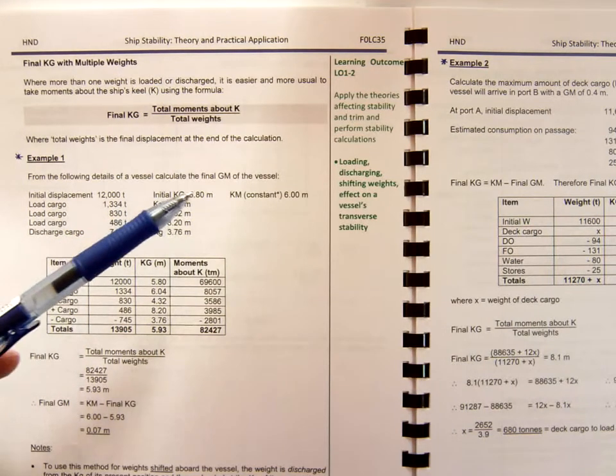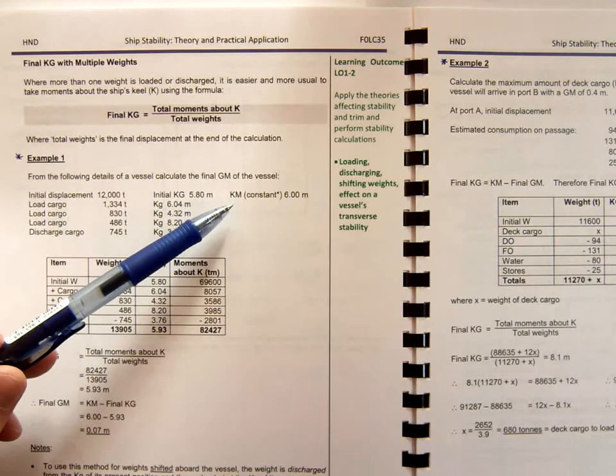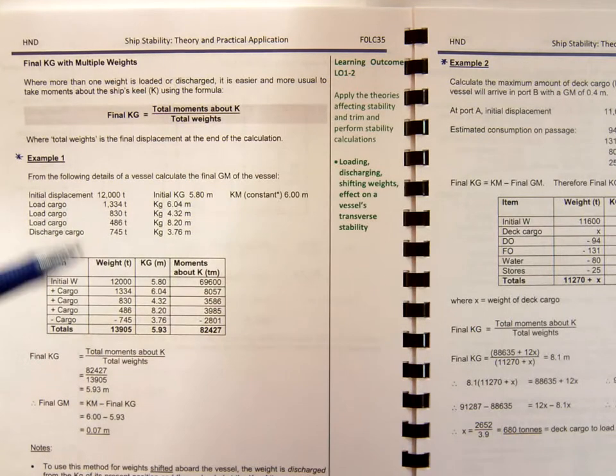As we go through the book, KM won't be constant. We'll need to look it up in our hydrostatic particulars, but for this example it's constant.